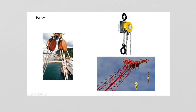The pulley is another type of simple machine, and there are several different kinds. We have block pulleys used on sailboats, we have hoists, and then we have block pulleys used on cranes.